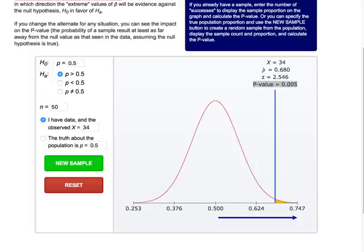So seeing 34 out of 50 heads for a sample proportion of 0.68 provides very strong evidence against the null hypothesis that the coin is fair and in favor of the alternative theory that the coin is biased towards heads. Notice that we are also given the value of the z-test statistic, which is 2.546.